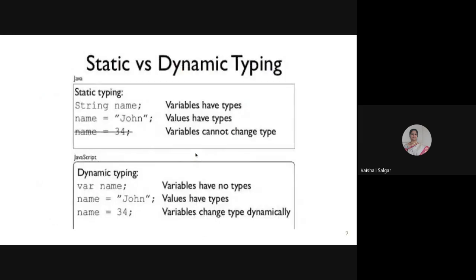Java is called a statically typed language. If you declare a variable as int and try to assign a float value, it won't be allowed — the type of that variable cannot change. Whereas in Python or JavaScript, you can override a variable's type. For example, you might first assign a string, then overwrite it with the integer value 34, making it of type integer.